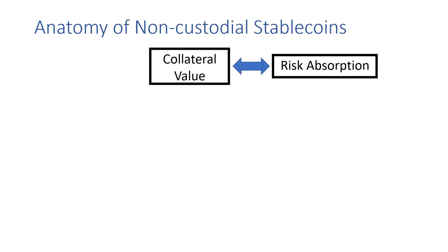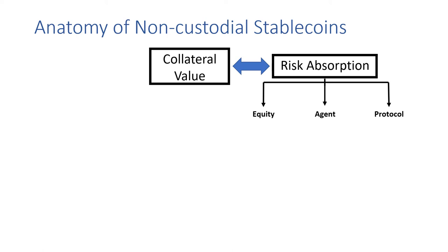This connects with a risk absorption function, which also has a few different forms: namely equity risk absorption, where there's a secondary fungible position that absorbs the risk; agent risk absorption, where agents can tailor their own risk positions; and protocol risk absorption, where the protocol holds assets or insurance itself, intending to stabilize the system.